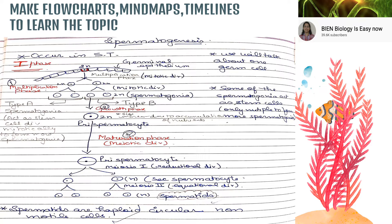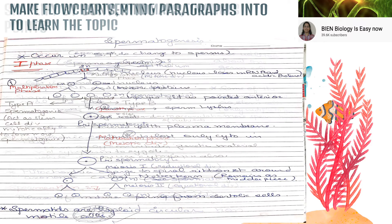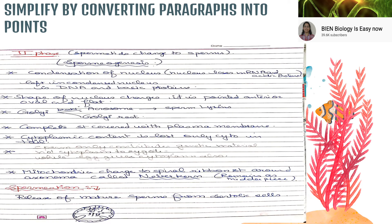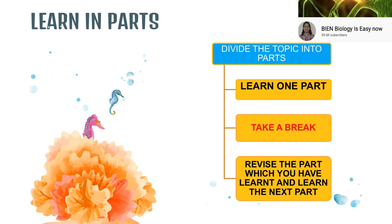Next is to simplify by converting paragraphs into pointers — this is very important. In biology, your books have everything in the form of paragraphs. When you go through those paragraphs, convert them into pointers. This will also help you to write your answers in exams.